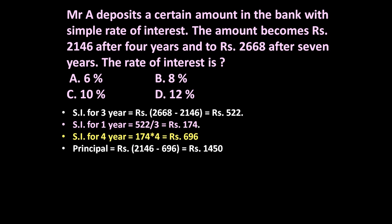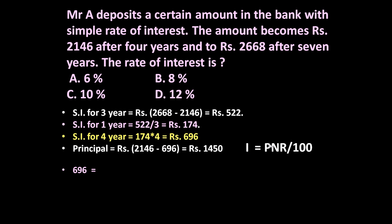We need to calculate the rate of interest. The formula is: I = P × N × R / 100, where I is the interest, P is the principal, N is the number of years, and R is the rate of interest. Here, I is 696, P is 1450, and N is 4 years.